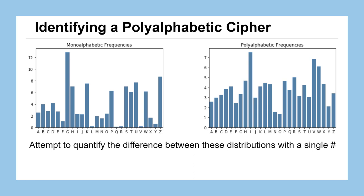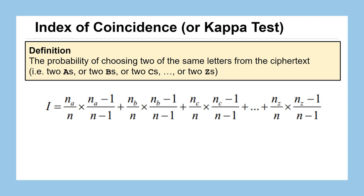When we use a polyalphabetic cipher, the goal is to smooth out the distribution — ideally making every letter appear at about 3.8%. It turns out that when you change the distribution, you also change a lot of the probability characteristics of those distributions. This allows us to compute a single statistic to determine, without even looking at a bar chart, whether a ciphertext came from a monoalphabetic or polyalphabetic cipher.